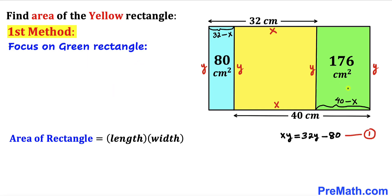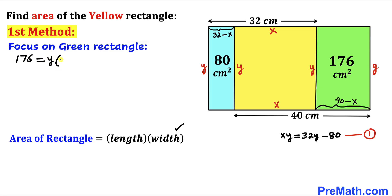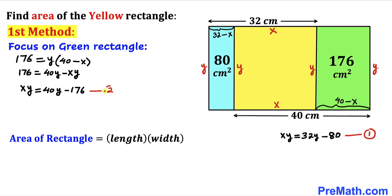Now let's focus on the green rectangle. Its length is y, its width is 40 minus x, and its area is 176. So we write: 176 equals y times (40 minus x). Distributing gives us 176 equals 40y minus xy. Moving xy to the left and 176 to the right, let me call this Equation 2.